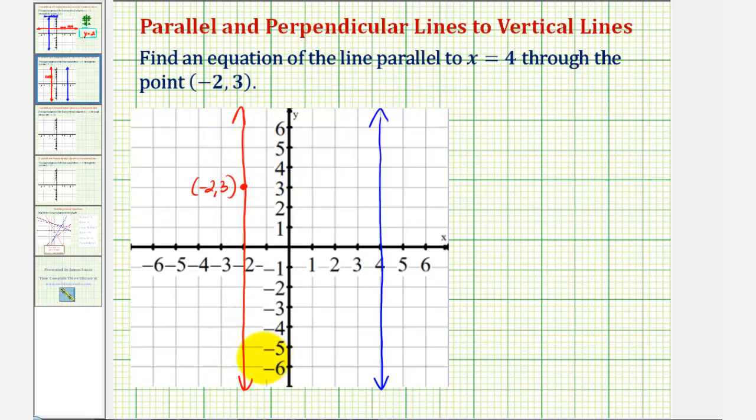Notice every point on this line has an x coordinate of negative two, which tells us the equation of the line is x equals negative two. Two vertical lines would always be parallel unless, of course, it's the same vertical line twice. I hope you found this helpful.